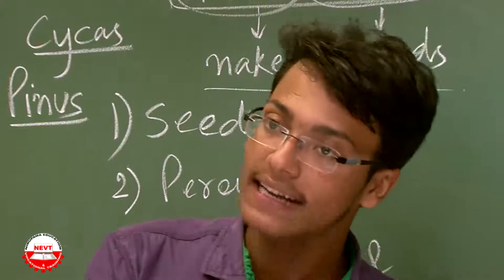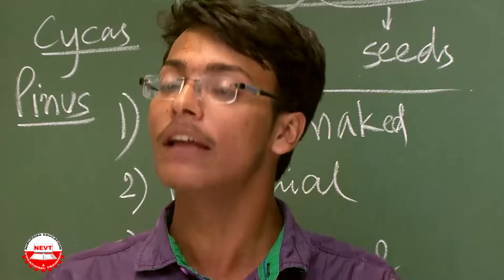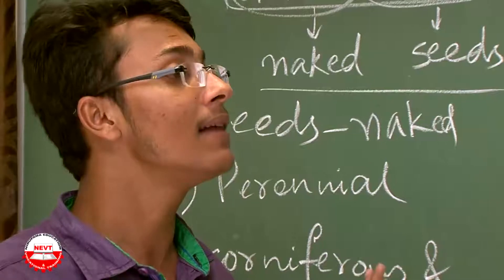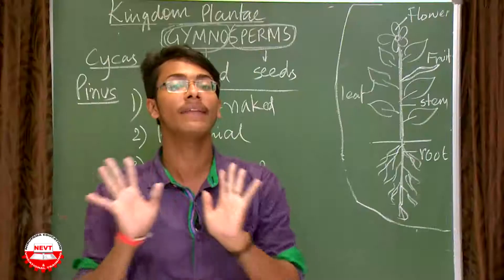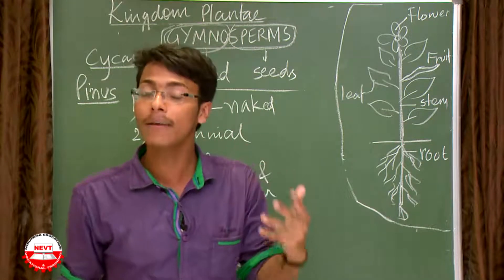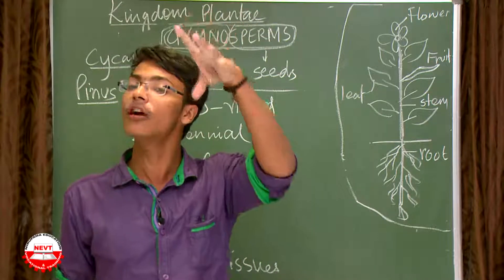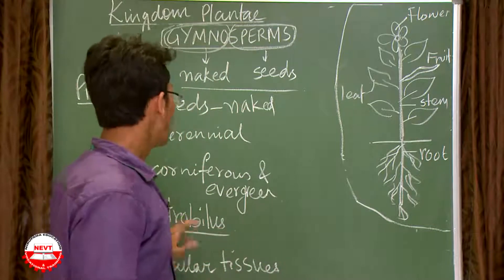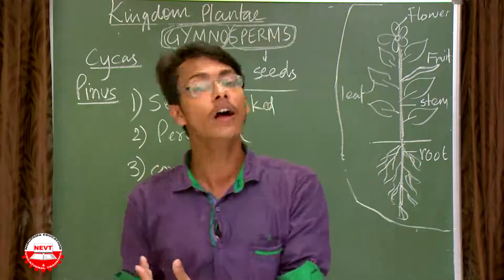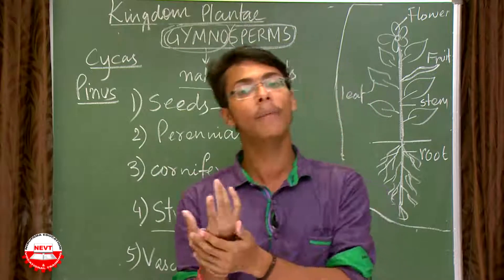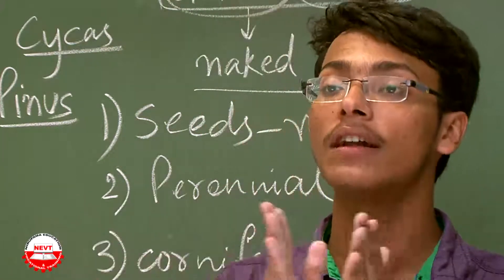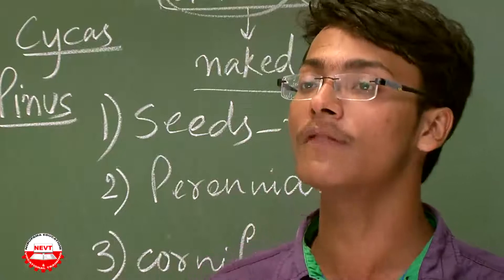To recap: gymnosperms means naked seeds — the first time in the plant kingdom we encounter seeds. They are perennial, living for a long period of time. They are evergreen and coniferous, having a cone-like structure because they grow in cold climates where snow must slide off. There is presence of strobili — the collection of male and female sex organs. Finally, they have vascular tissues — xylem and phloem — for the conduction of food and water throughout the plant.